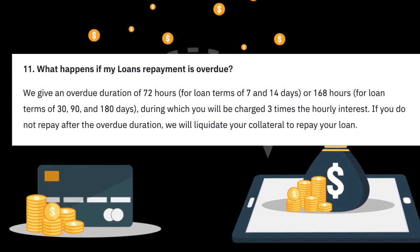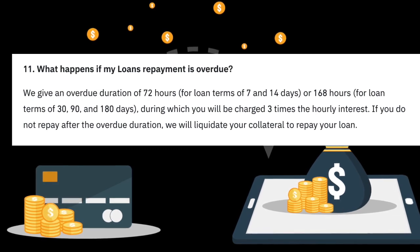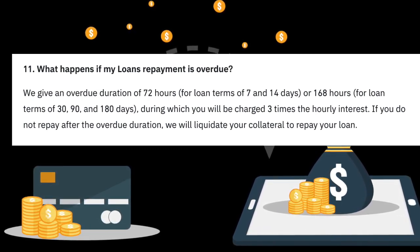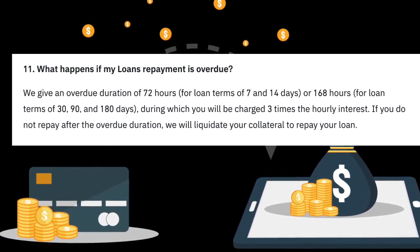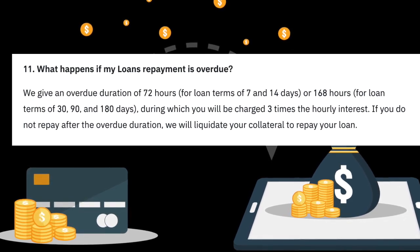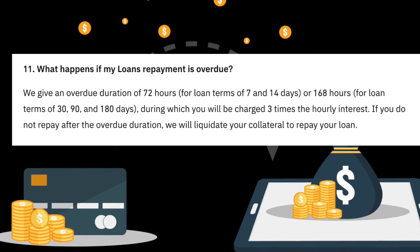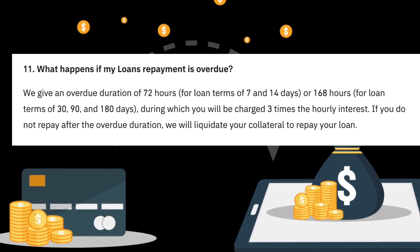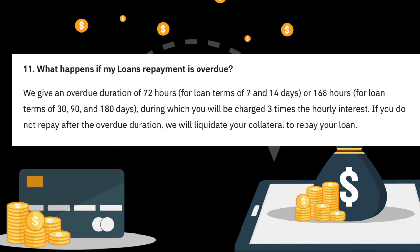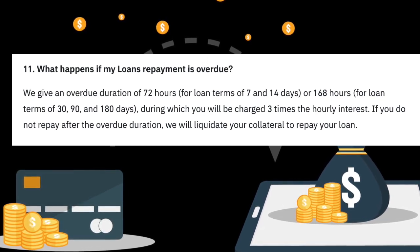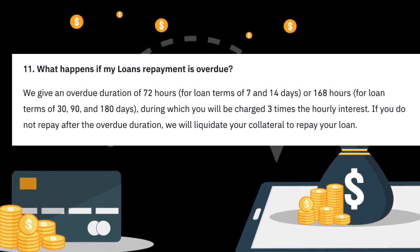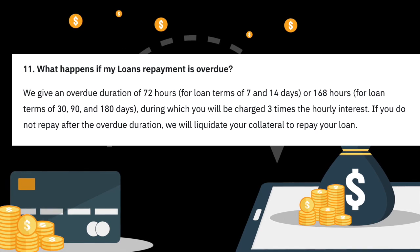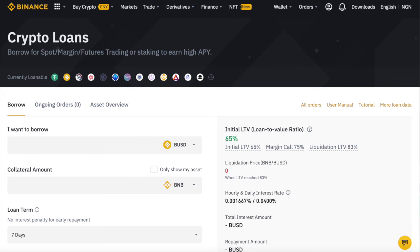If your repayment date is overdue — meaning you are unable to pay at the end of the agreement period — Binance will give an overdue duration of 72 hours for loan terms of 7 and 14 days, or 168 hours for loan terms of 30, 90, and 180 days. During this overdue period, you will be charged three times the hourly interest rate. If you do not repay after this overdue duration, your collateral will be liquidated and used to repay your loan.